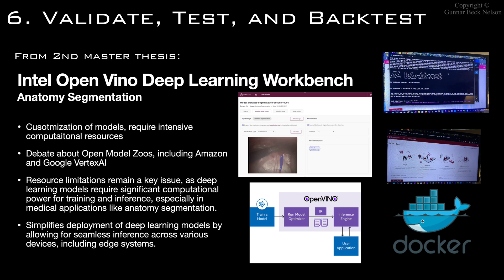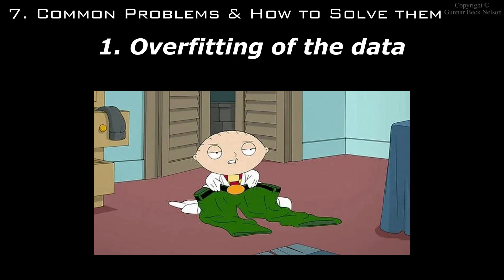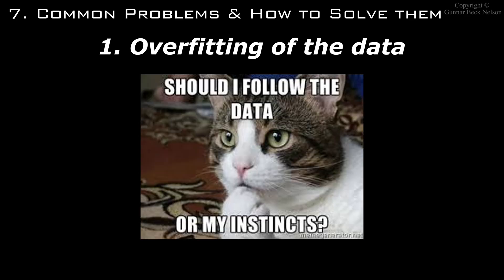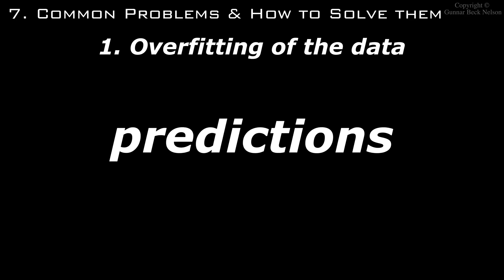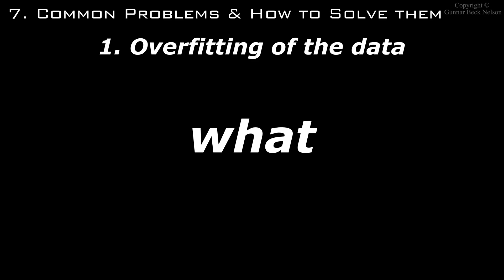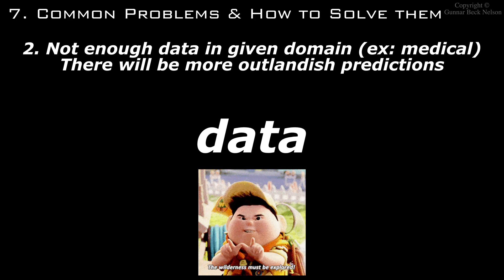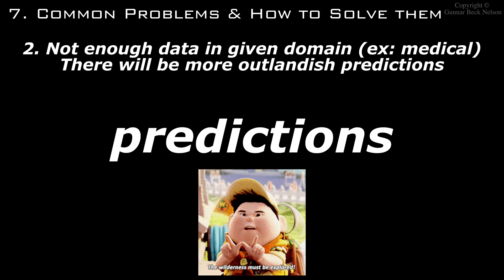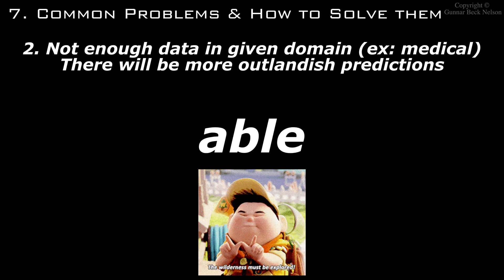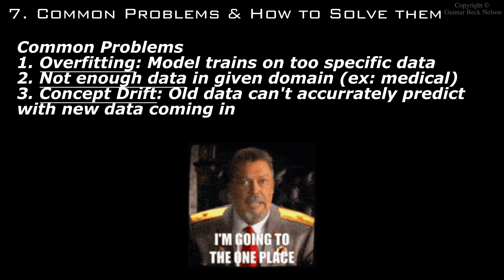Common problems we may face include overfitting, where the data is not diverse enough for the model to make accurate predictions on untrained data. Another problem is a lack of data, which leads to poor and outlandish predictions — more data typically helps the model architecture during training.